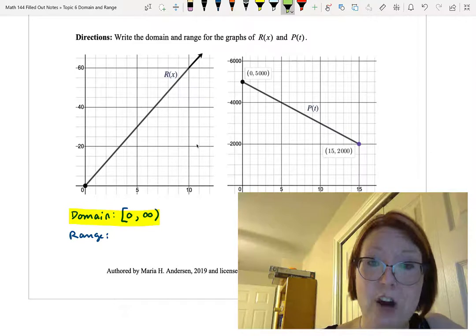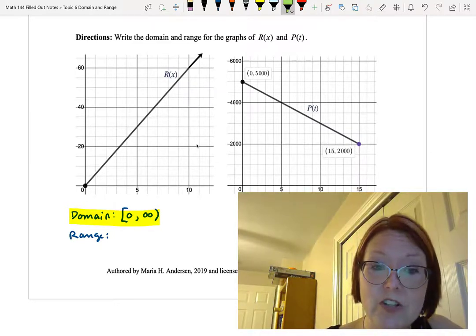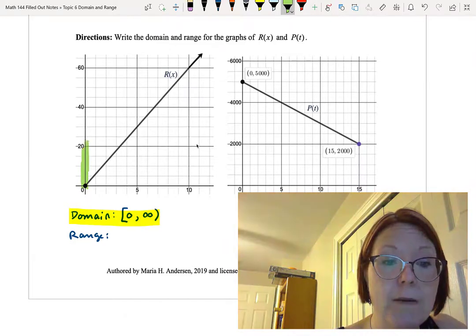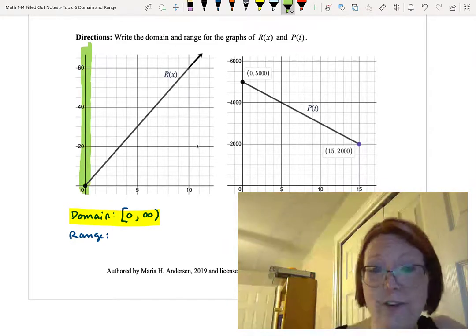Now let's think about the range of r of x. Again, we're starting at that defined point of 0 and now going up, and we're going up forever on the graph.